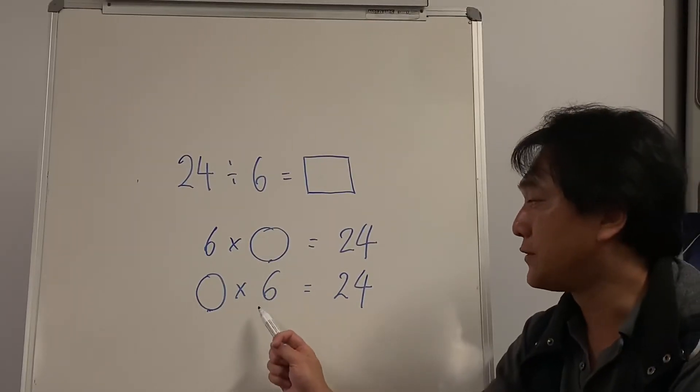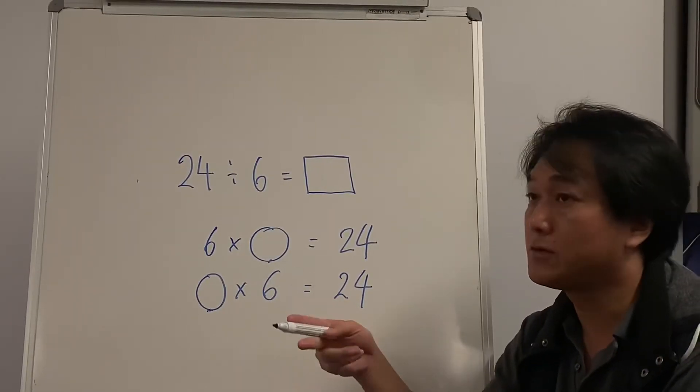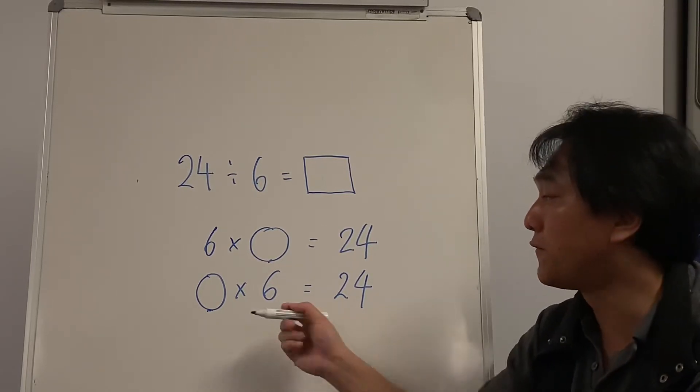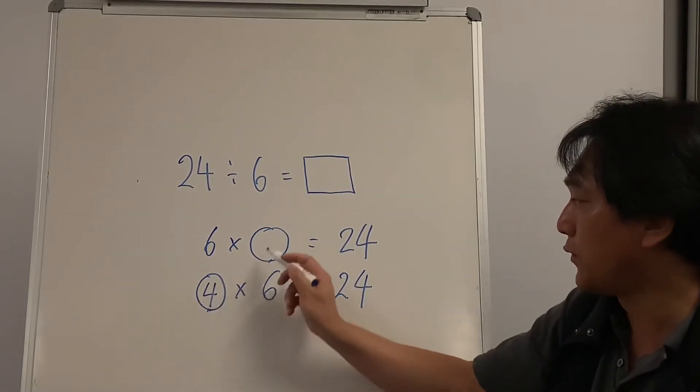1 six is 6, 2 sixes is 12, 3 sixes is 18, 4 sixes is 24.